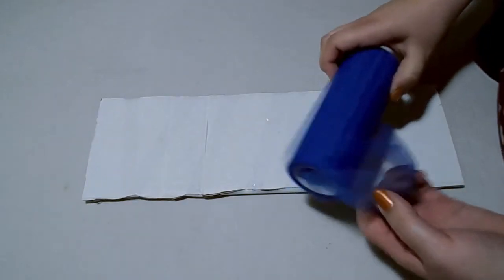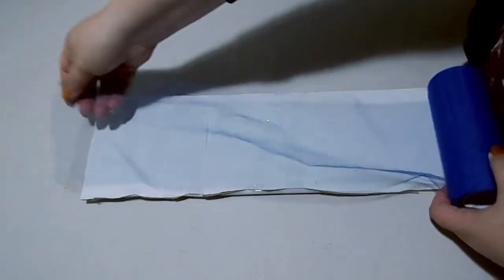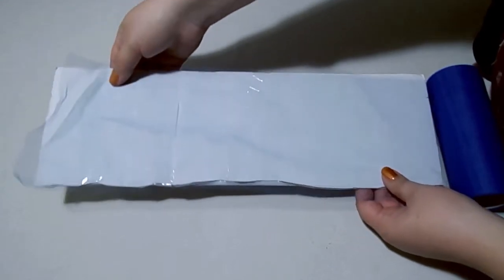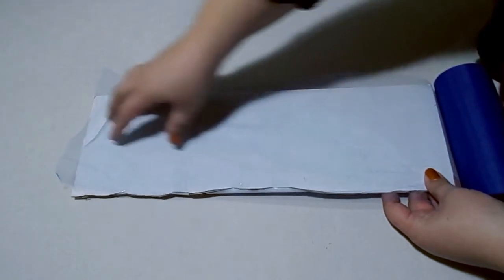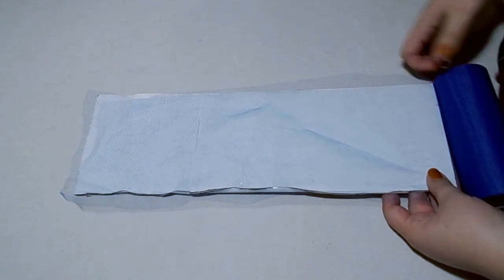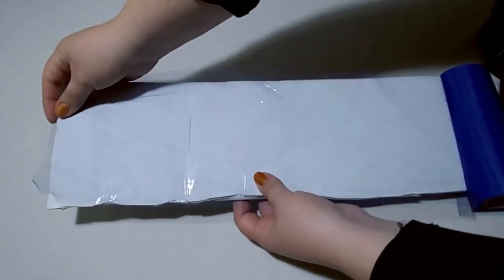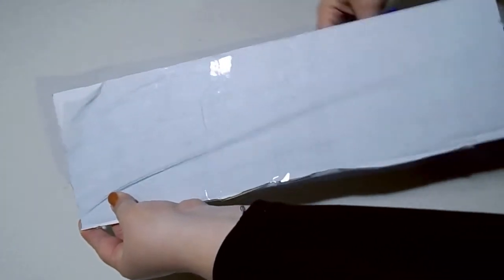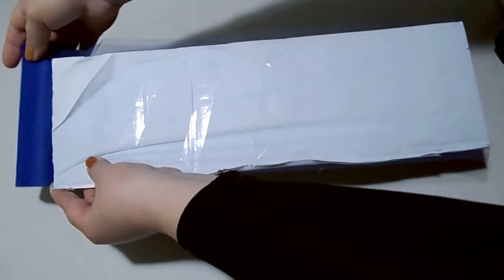When you're cutting your tulle for your tutu, particularly if you're using tulle on the roll, a little trick that will help save time is actually a piece of cardboard. Cut a piece of cardboard the length that your tulle piece needs to be, so that's twice the length of the skirt size that you would like. Then take your tulle, hold it to the top, and simply wrap your tulle from the roll around your cardboard.